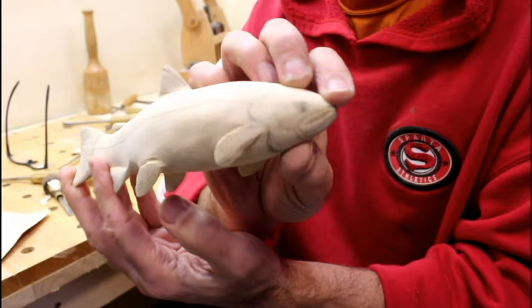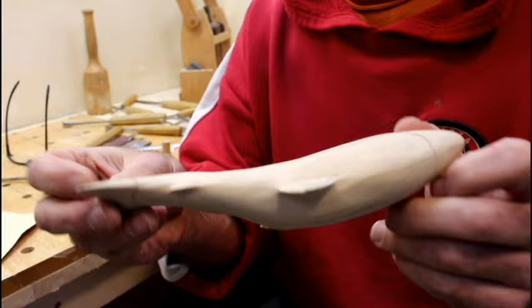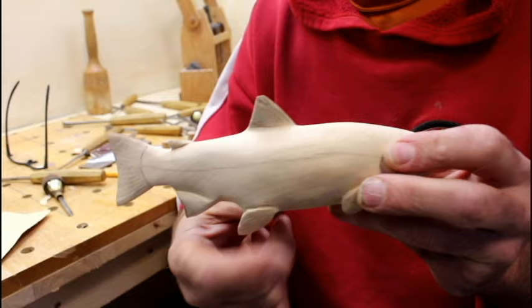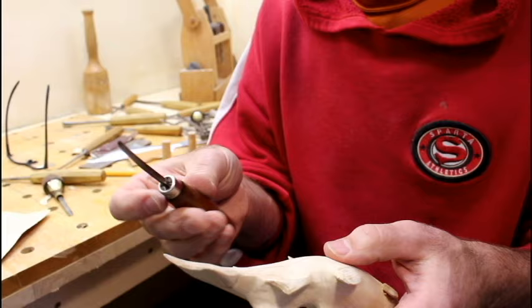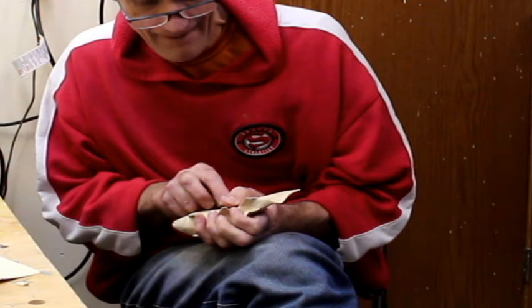It's all sanded and I've got drawn in some of the details I need to carve yet. So I'm going to start with all these fins, get in these lines. To get those I'm just going to use this tiny V gouge that I have.